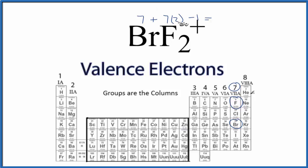Add this up, we get 14 plus 7, that's 21 minus 1, 20 total valence electrons for the BrF2+ Lewis structure.